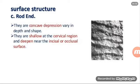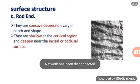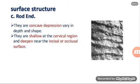In surface structures there are perikymata, rod ends, and cracks. Perikymata: you can see the transverse grooves in the tooth. They are continuous around the teeth and usually lie parallel to each other and to the cemento-enamel junction. Ordinarily there are about 30 perikymata per millimeter. They are concave and vary in depth and shape, shallowest in the cervical region and deepest near the incisal or occlusal edge.